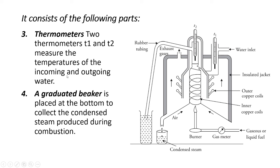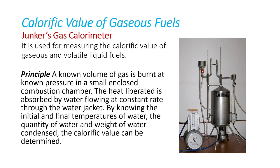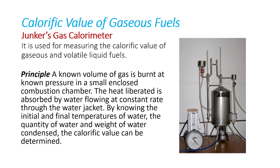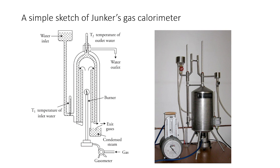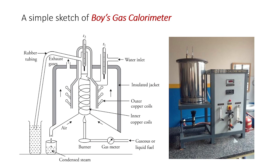So those are the three devices used to determine the calorific values of fuels. First, we have the bomb calorimeter. Next is the Junker's gas calorimeter. And the last is the Boy's gas calorimeter.